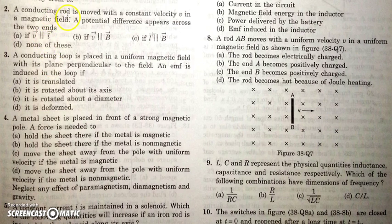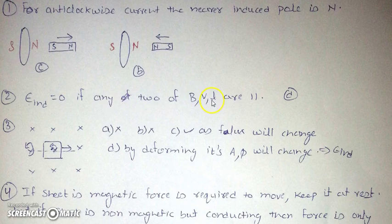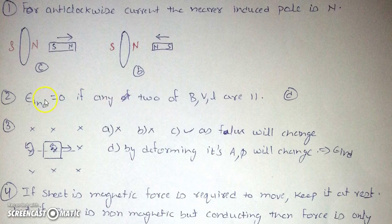The next question: a conducting rod is moved with constant velocity V in a uniform magnetic field. A potential difference will appear on the two ends of the rod only if none of the three vectors V, B, and L are parallel to each other. If any two of V, B, and L are parallel — whether B parallel to L, B parallel to V, or V parallel to L — there will be no induced EMF. So in these three cases there is no induced EMF, and the answer is D only.